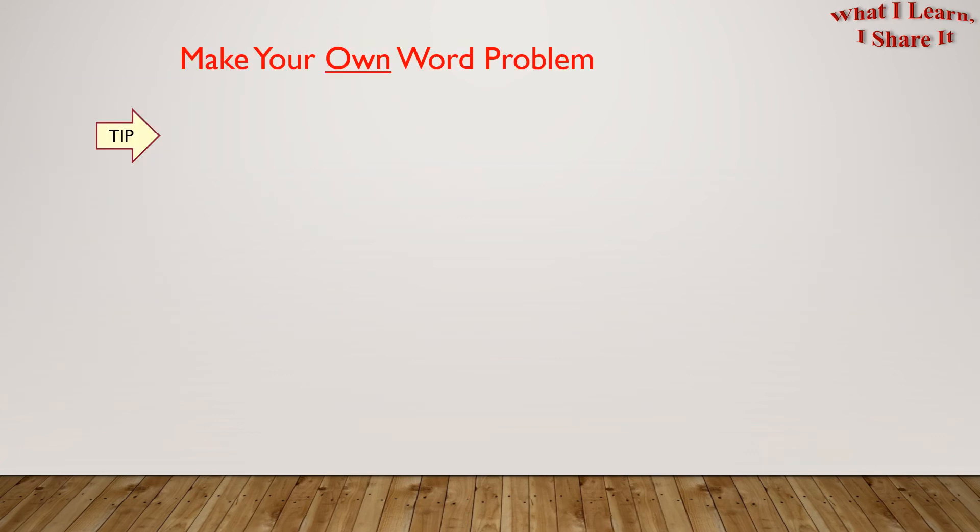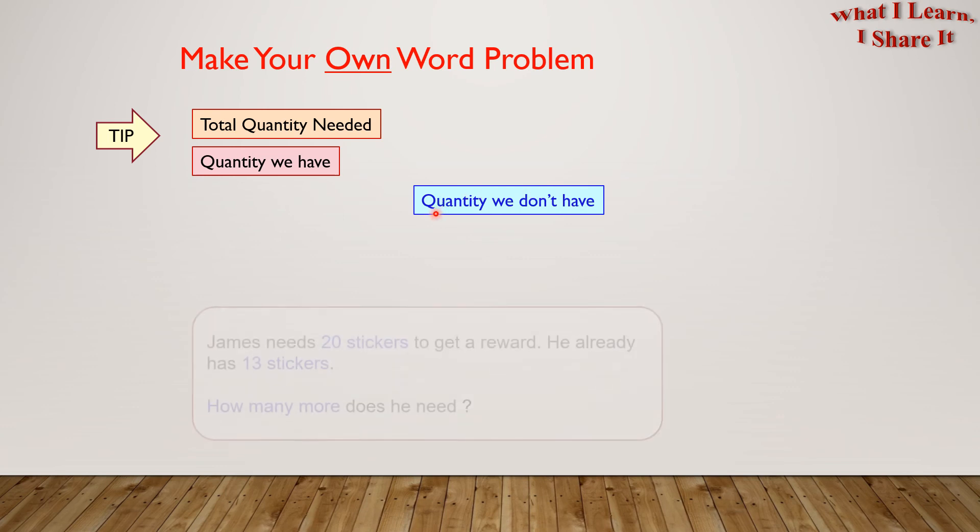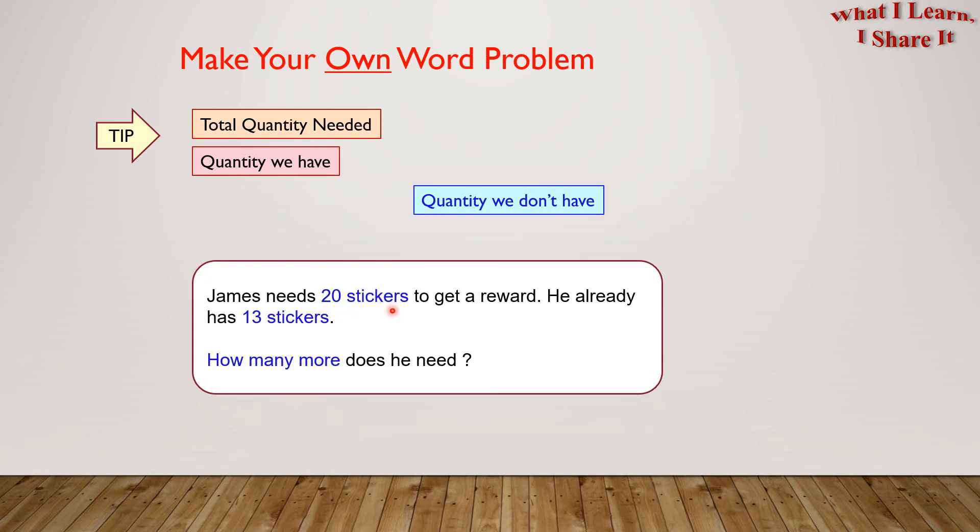Coming up is the fun part. And that is, make your own word problem. Here is a tip. We can think of some things that we need. And then think of a total quantity needed. Then we can think of how many quantities we have. And then we can put up a question asking how many quantities we don't have. Let's see this example I made. James needs 20 stickers to get a reward. He already had 13 stickers. How many more does he need? In this way, you can make your own word problems, too.